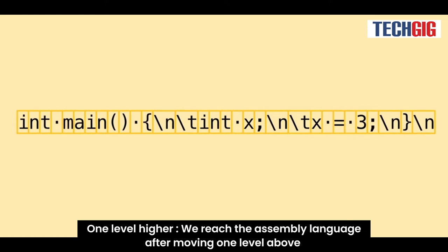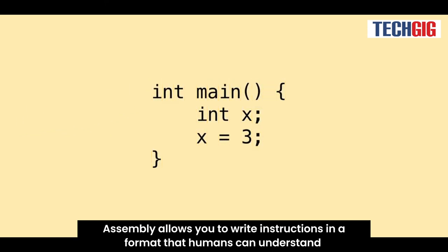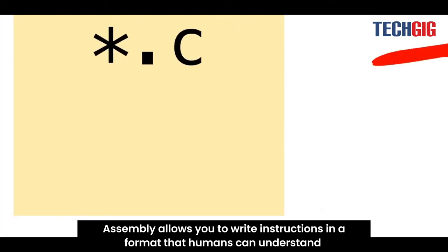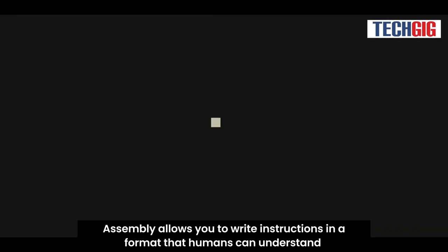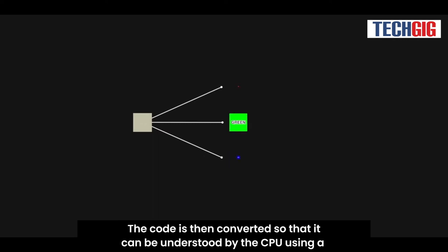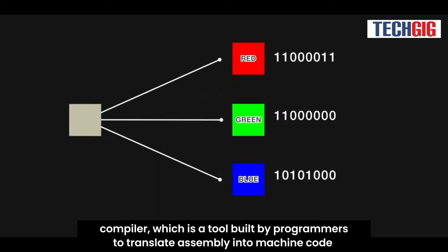One level higher will reach the assembly language after moving one level above machine code. Assembly allows you to write instructions in a format that humans can understand. The code is then converted so that it can be understood by the CPU using a compiler, which is a tool built by programmers to translate assembly into machine code.